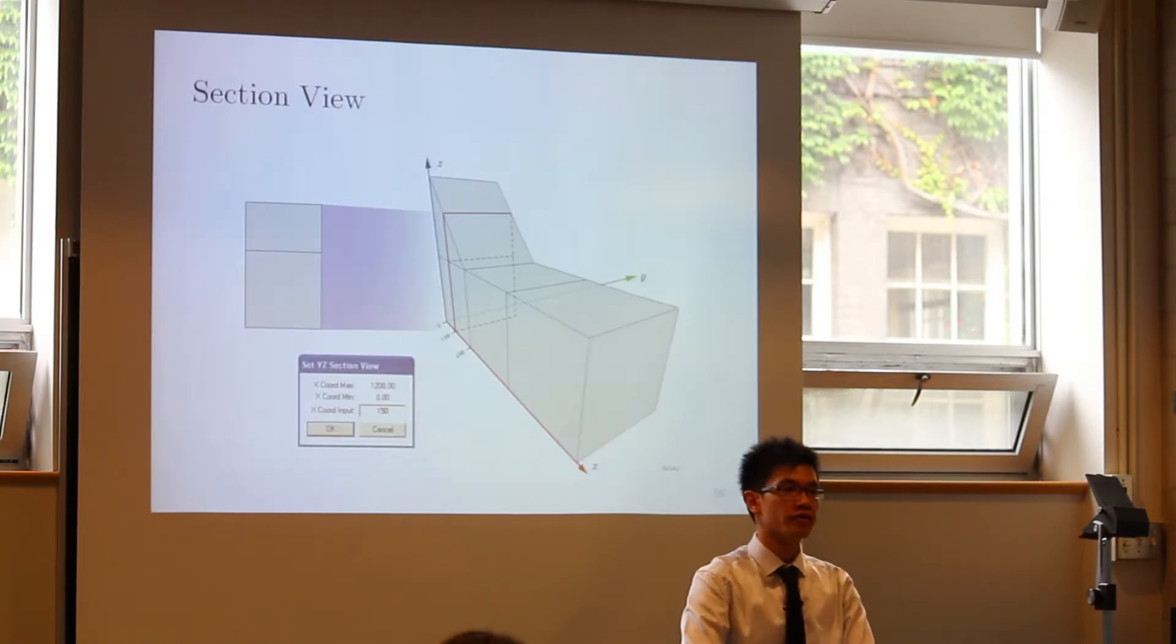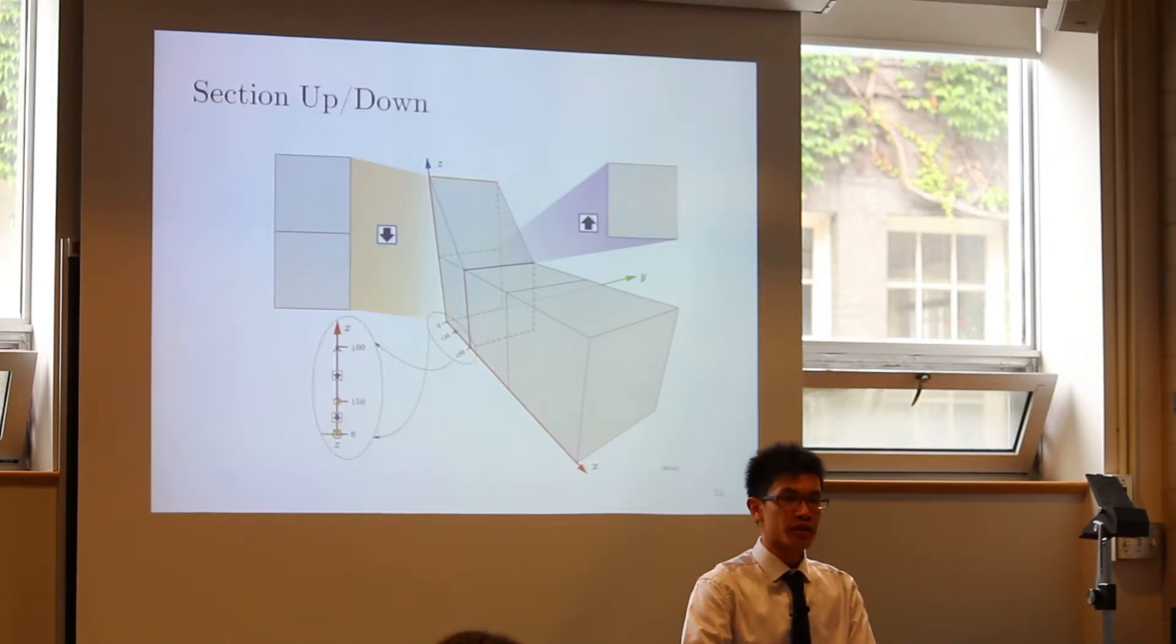As far as alternative view modes, Janus hosts the section view function, which displays intermediate planar sections of a model at any specified coordinate within the model boundaries. Within the section view, section up and section down buttons may be used to incrementally increase or decrease section coordinates between intermediate layers of nodes.